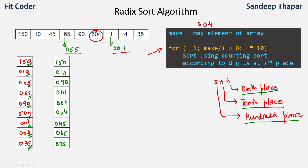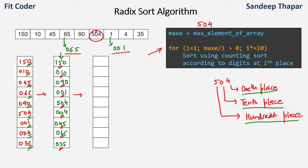The second iteration of the loop sorts using the digits at the 10s place, which are highlighted in red. After sorting by the 10s place we get: 001, 504, 004, 010, 035, 045, 005, 150, 065, and 090.